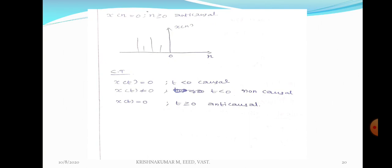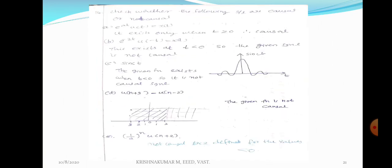x(t) not equal to 0 when t less than 0, or x(n) not equal to 0 when n less than 0 — it will be a non-causal signal. For anti-causal signal: x(n) equal to 0 when n greater than or equal to 0, or x(t) equal to 0 when t greater than or equal to 0 — it will be an anti-causal signal. Now there are some problems — check whether the following signals are causal or non-causal.